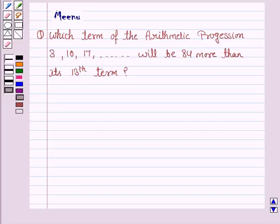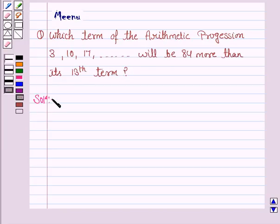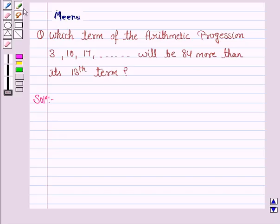Hello and welcome to the session. Let's work out the following problem: which term of the arithmetic progression 3, 10, 17, and so on will be 84 more than its 13th term? We have to find the term of the arithmetic progression which is 84 more than its 13th term.